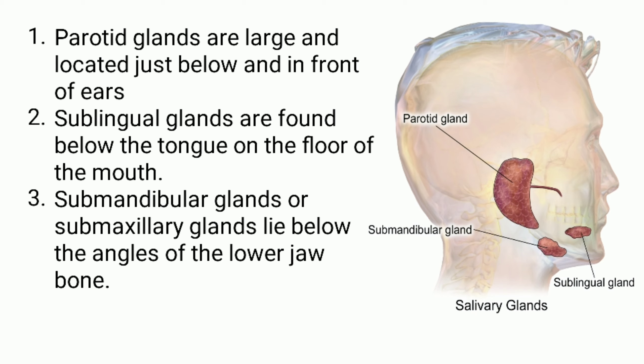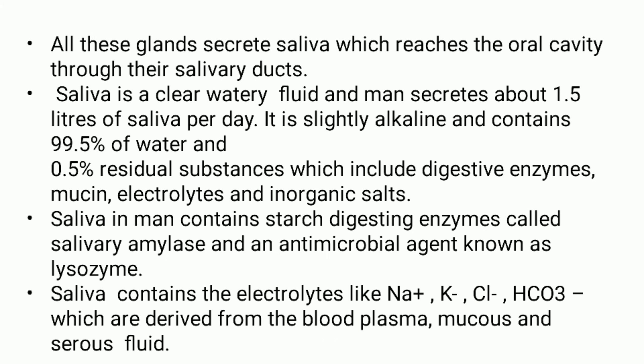The first type is parotid glands, located just below and in front of the ear. The second type is sublingual glands, found below the tongue and the floor of the mouth. The third type is submandibular glands, also known as submaxillary glands. They lie below the angles of the lower jaw bone. All these glands secrete saliva which reaches the oral cavity through their salivary ducts.